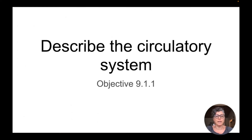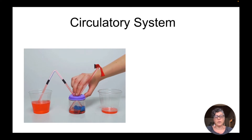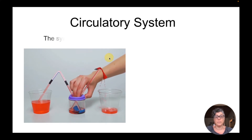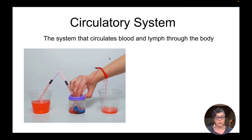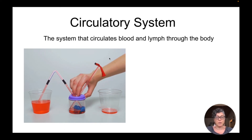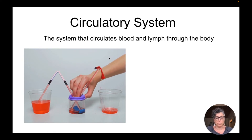This video covers the IGCSE Biology objective 9.1.1 on the 2025 CAIE syllabus to describe the circulatory system. This is a system that is going to circulate blood and lymph through the body. In this particular unit we will mostly focus on blood, and we will very briefly at the end talk about lymph and what that is and how it moves through the body.